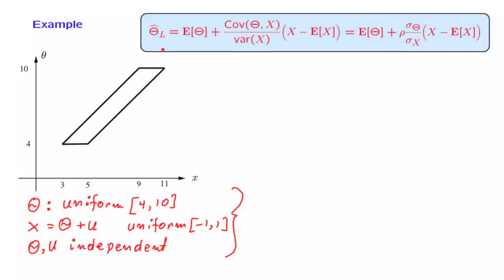So now to develop the form of the optimal linear estimator, all we need to do is to determine the various constants that show up. So let's start with expectations. Theta is uniform from 4 to 10, therefore the expected value is the midpoint, which is equal to 7. u has a symmetric distribution around 0, so its expected value is going to be equal to 0. x is the sum of theta and u, therefore its expected value is the sum of these two expected values and is equal to 7.